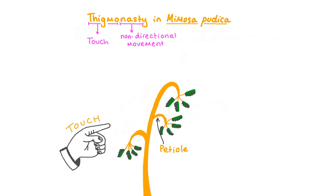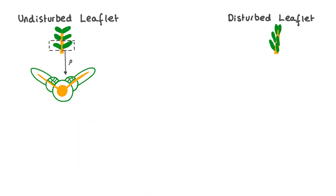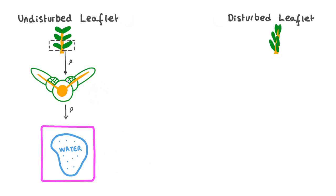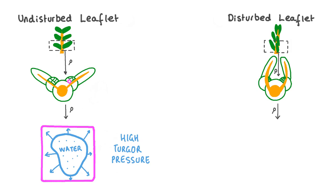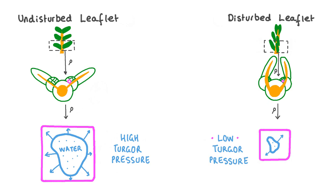Let's look at how Mimosa plants can close these leaflets so rapidly. A simplified magnified view shows one part of the leaflet. Magnifying further, we can see that the cells contain water inside a structure called a vacuole. Turgor pressure is the pressure exerted by water on the walls of the cells in the base of the leaflets. A lot of water in a cell means high turgor pressure, making the cells turgid. When the plant is touched, a signal causes these cells to lose water, lowering turgor pressure and decreasing turgidity, which causes the leaflets to close.